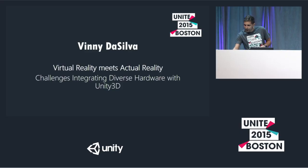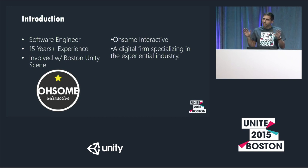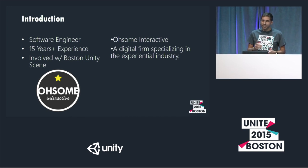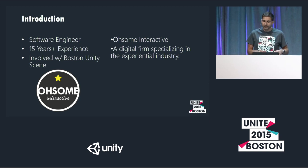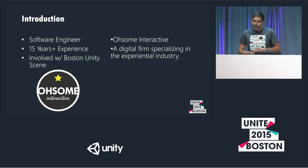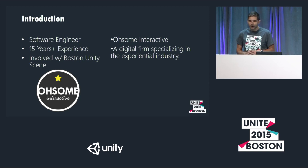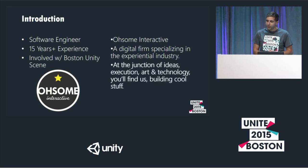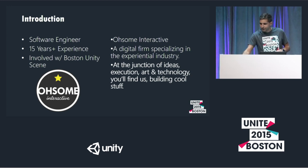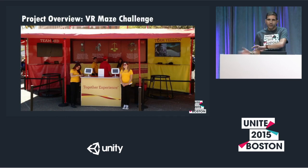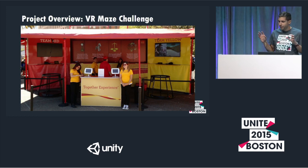Let's get started. I work with an awesome company called Awesome Interactive — at the junction of ideas, execution, art, and technology, you'll find us building cool stuff. Before I go too deep into it, I want to give you a quick overview. Here's the footprint of our activation: there's a big central array in the middle showing a map overview of a maze — that's the game. We have televisions for two players, each player has an Oculus, a webcam, and the big new thing is the WizDish — a locomotion platform.